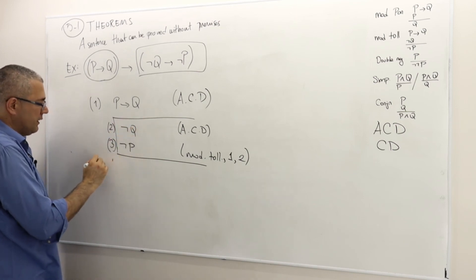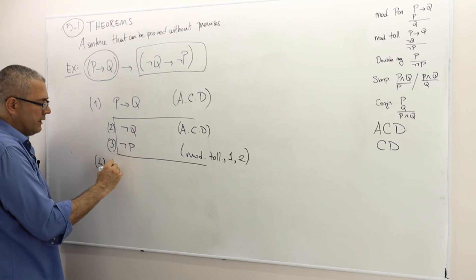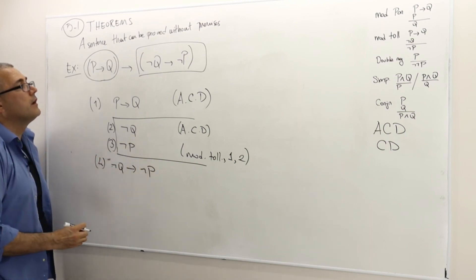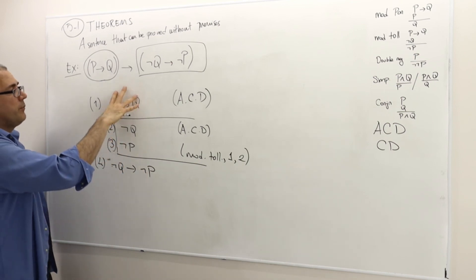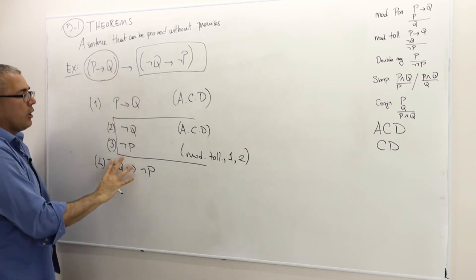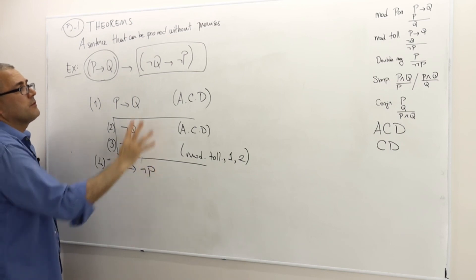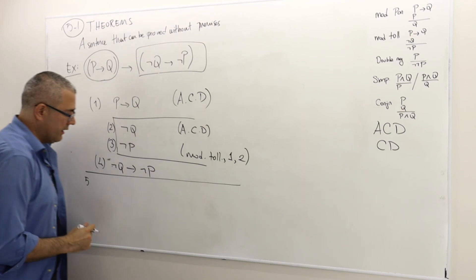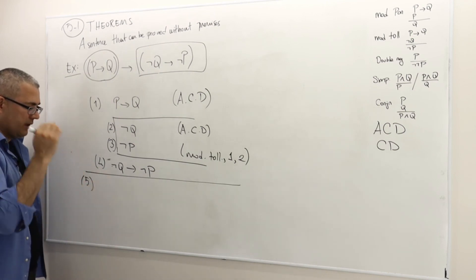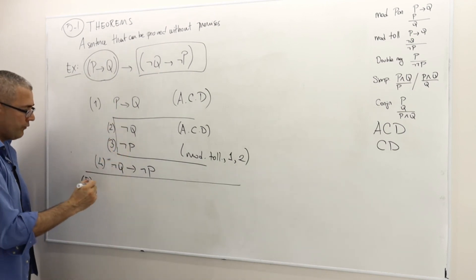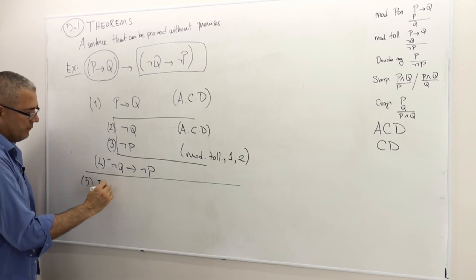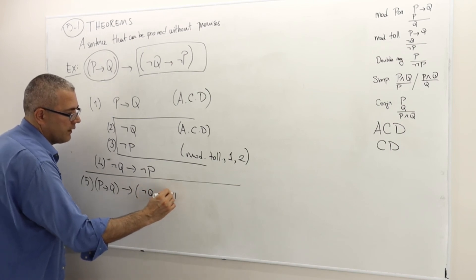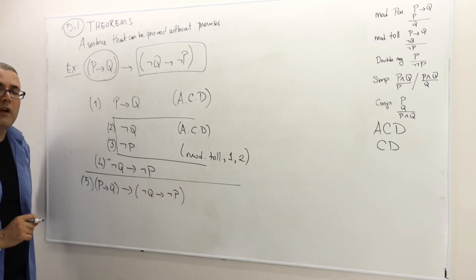So that means in line 4, I have not Q implies not P. Remember, I started with P implies Q being true, and I showed that not Q implies not P must be true as well. So therefore, line 5 is the final conclusion of this proof. We have proven that P implies Q implies not Q implies not P. This is how we prove a theorem.